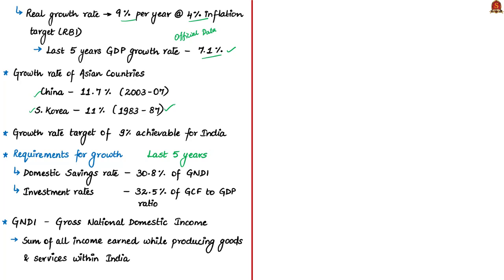The author asserts that no country grew at 9% without mobilizing domestic savings and raising fixed investment rates. In the last 5 years, on average, the domestic savings rate was 30.8% of Gross National Domestic Income (GNDI), and the investment rate — gross capital formation to GDP ratio — was 32.5%. GNDI measures the economic activity based on income earned on production, whereas GDP measures the economic activity of production only.